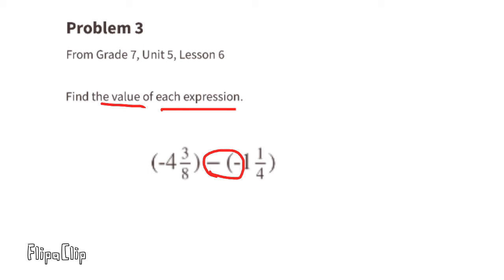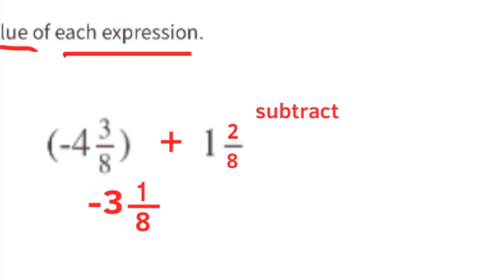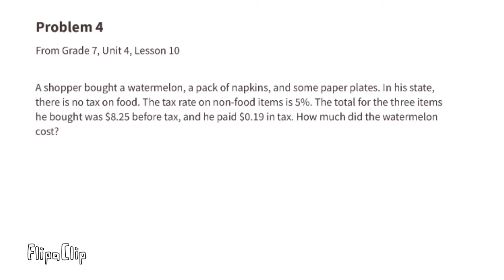Making the common denominator eight: one and one-fourth becomes one and two-eighths. Since the absolute value of negative four and three-eighths is greater than the absolute value of one and two-eighths, the answer will be negative. We subtract: four minus one is three, and three-eighths minus two-eighths is one-eighth. The difference is three and one-eighth, but the answer is negative, so the value is negative three and one-eighth.